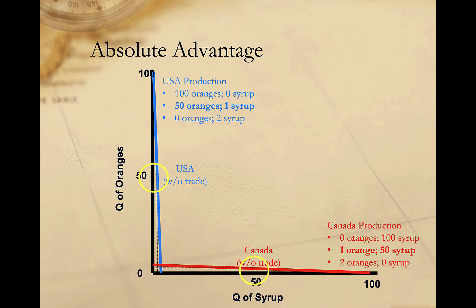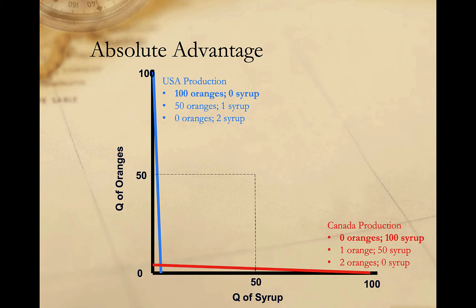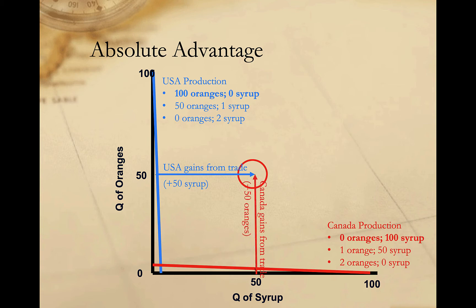But if each country specializes and trades, the United States produces 100 oranges and Canada produces 100 syrup. Each country winds up at a point on their production possibility frontier that neither could have reached without specialization and trade. The United States winds up consuming 50 oranges — the same as without trade — and 50 syrup, 49 more than it could consume without trade. And Canada winds up consuming 50 syrup and 50 oranges, which is 49 more than it would have consumed without trade.